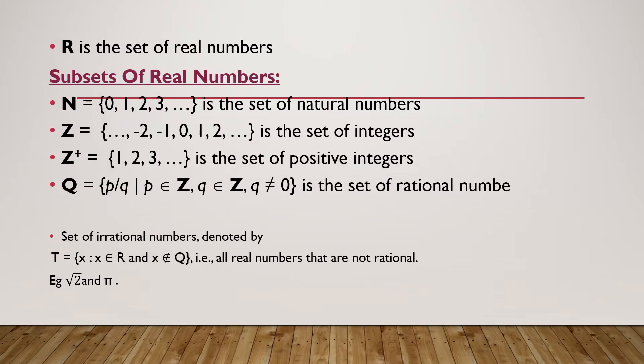Next is the subsets of real numbers. R is denoted as the set of real numbers. We also have N (natural numbers), Z (integers), Z+ (positive integers), Q (rational numbers), and irrational numbers — because all these are subsets of real numbers.